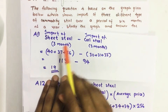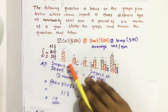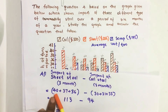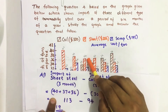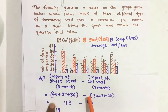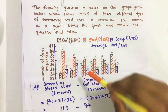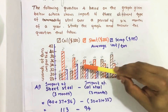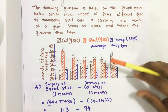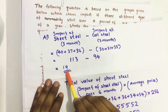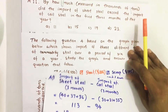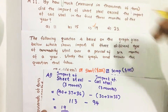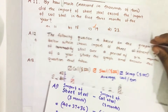In the first month sheet steel is 40, second month 37, third month 36. Subtracting the coil steel values and finding the difference, we get 19. So our answer is option C: 19.